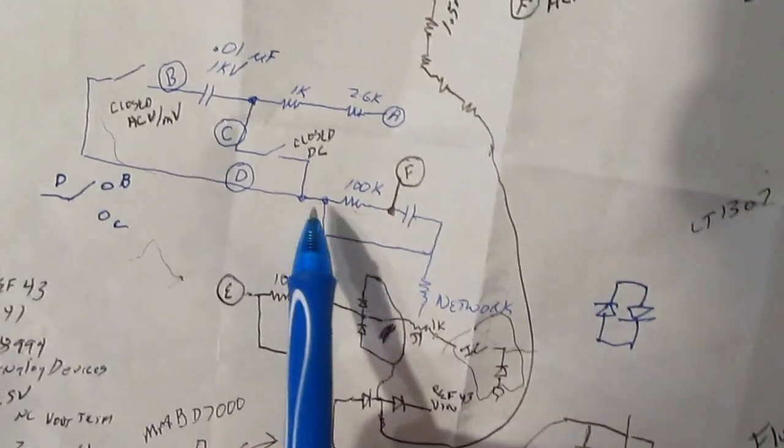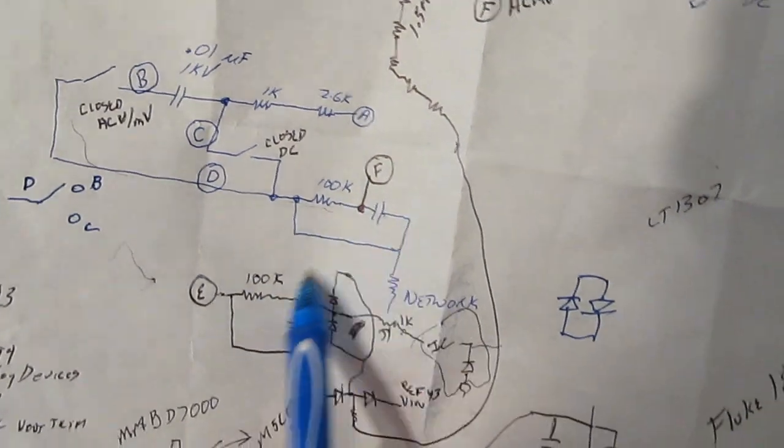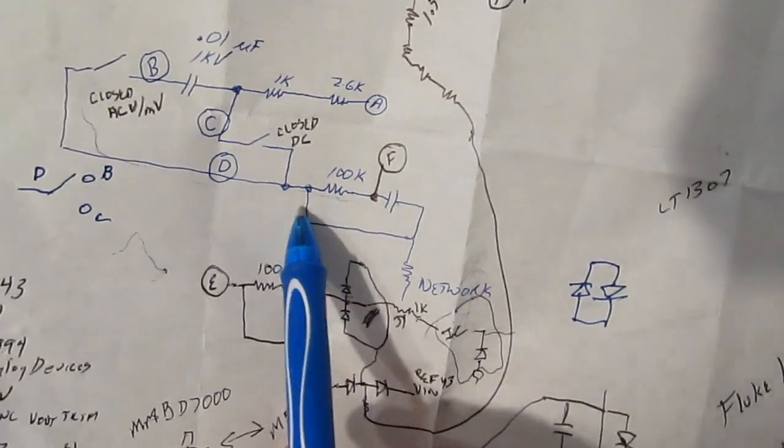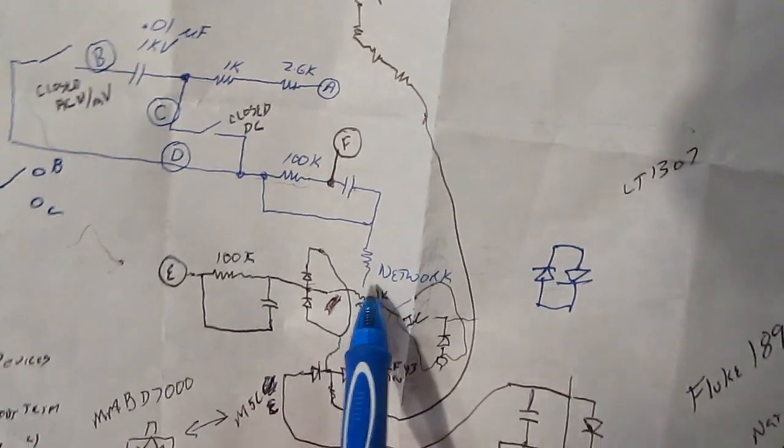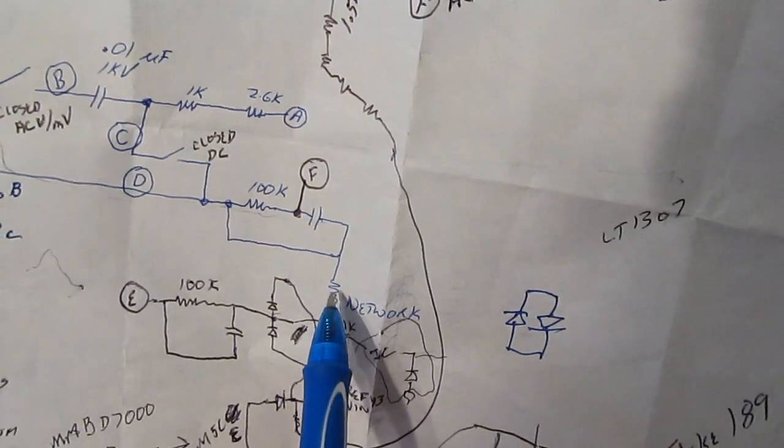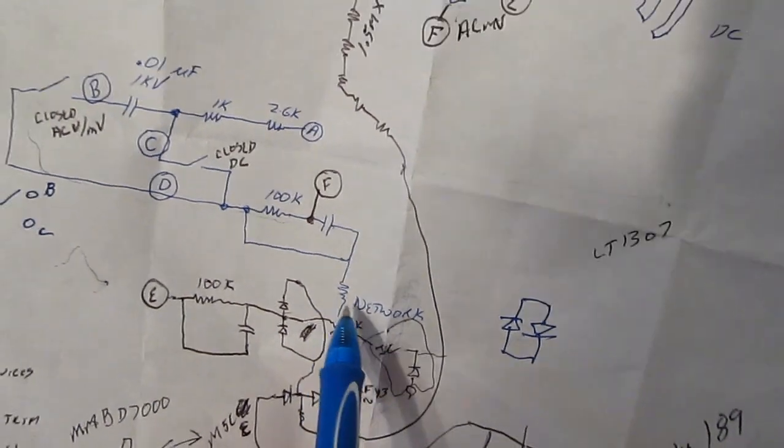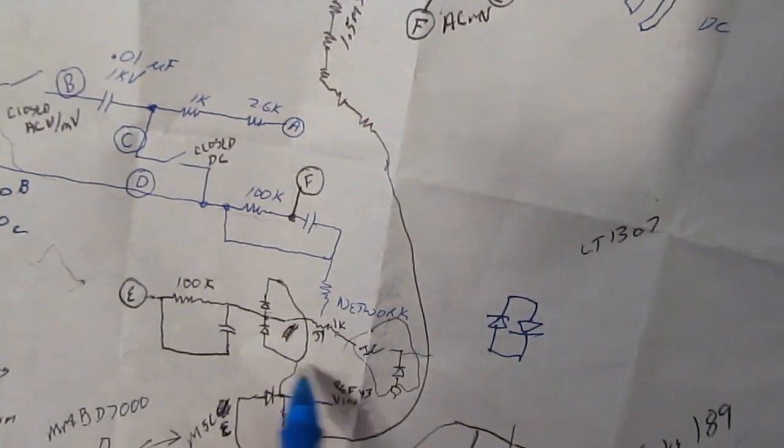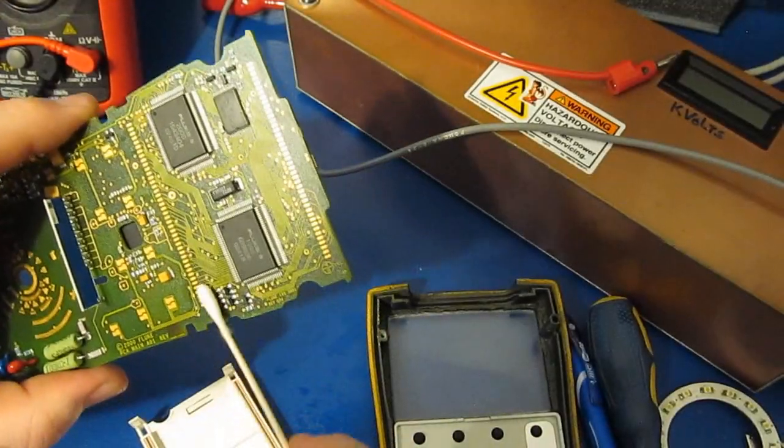If it's in the AC volt mode, we have a much higher impedance just in the fact that we have this network in series with all this. Just want to make sure that if there's any oils or anything left from our fingers, we want to get rid of that.